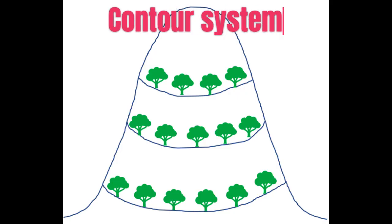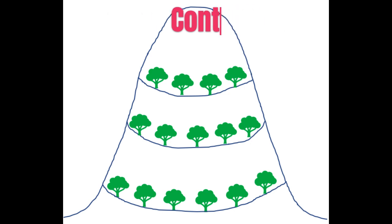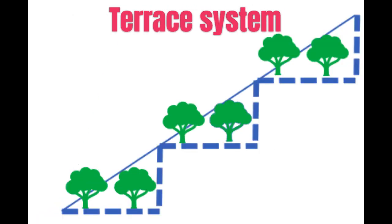The contour system is adopted in hills with gentle slopes. In this system, a series of contour lines joining points of equal elevation are drawn, and crops are planted along the contour lines. The terrace system is adopted in hills with steep slopes. In this system, a series of flat surfaces known as terraces are formed across the slope, and crops are planted on the terraces.